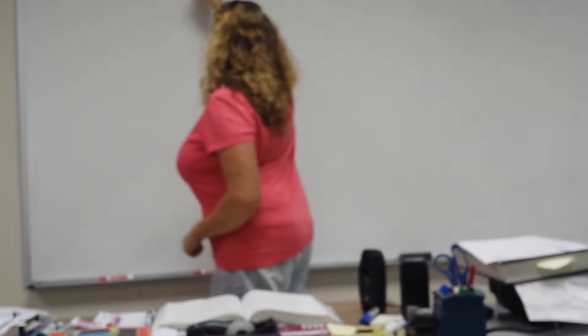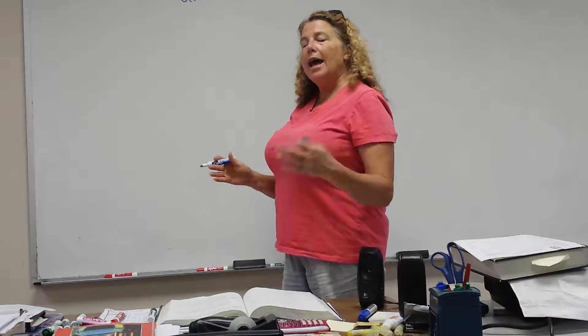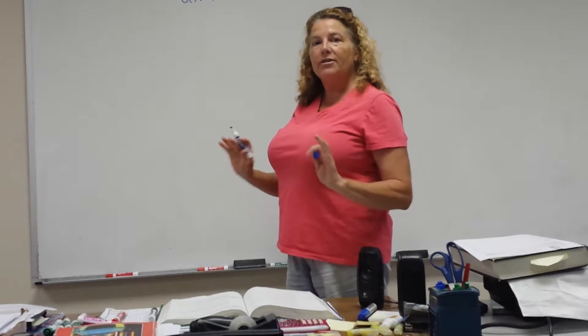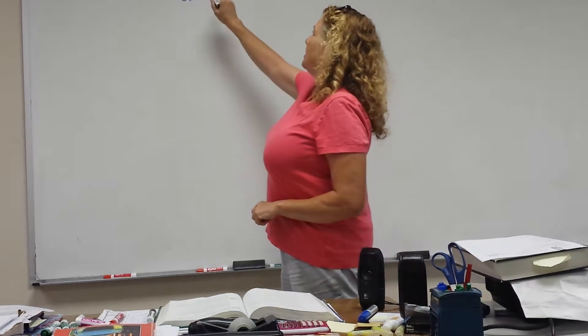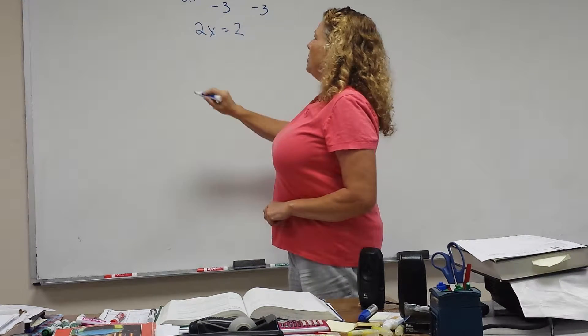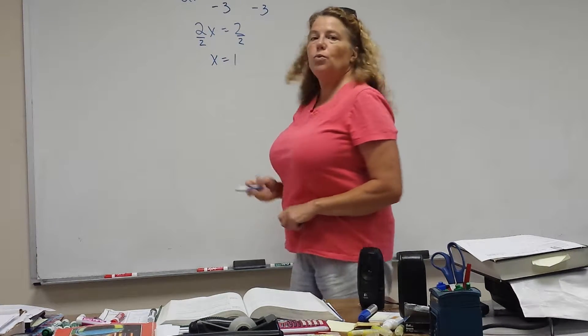If you have 2x plus 3 equals 5, when you solve that equation, as long as you add, subtract, multiply, or divide the same thing on both sides, you haven't changed the equation. So we solve it by saying minus 3 minus 3, 2x equals 2, and then you divide both sides by the same number, and you have x equals 1.